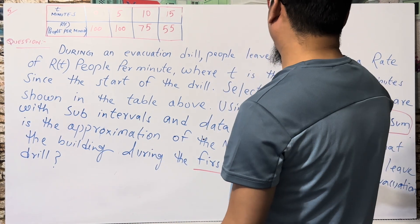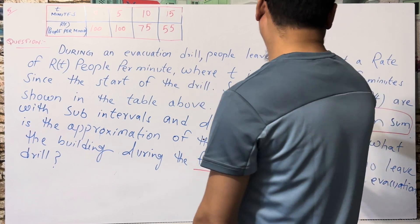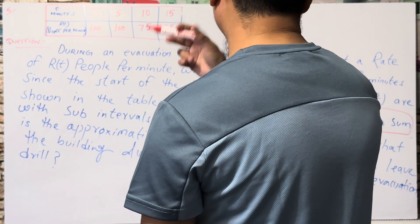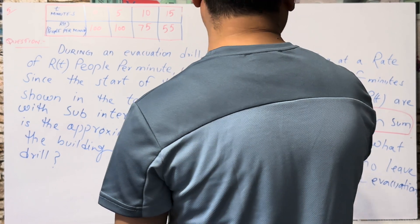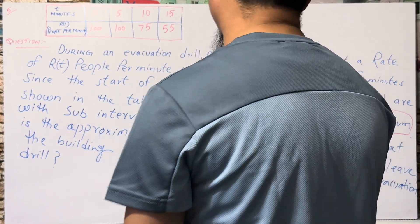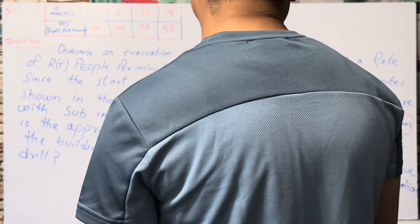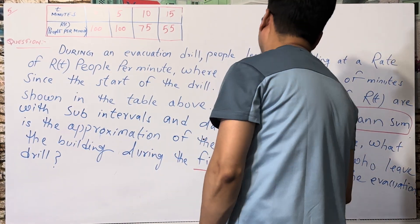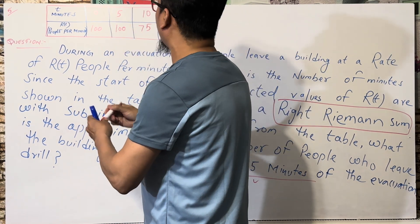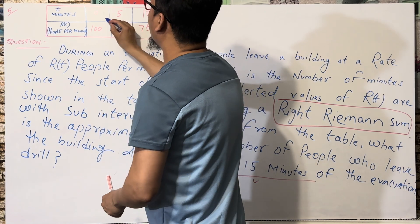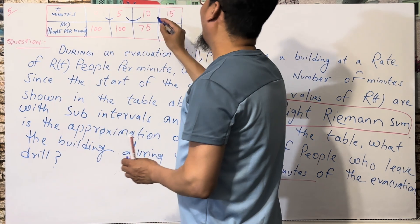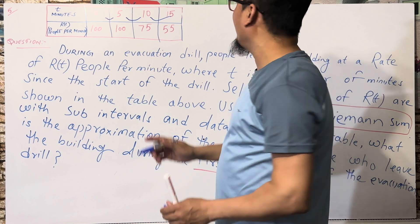The first key point is we're using right Riemann sums. We need to find the number of people during the evacuation. The first 15 minutes means we go from zero to fifteen. The first interval is zero to five, the second interval is five to ten, and the third interval is ten to fifteen.